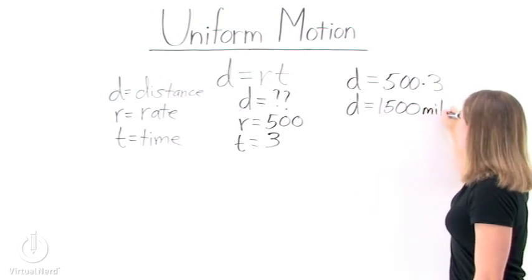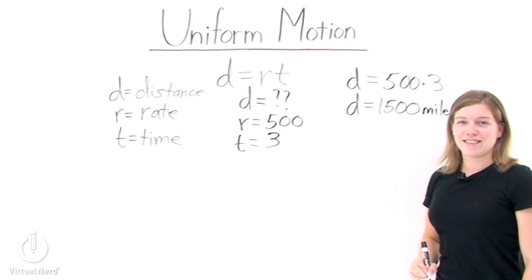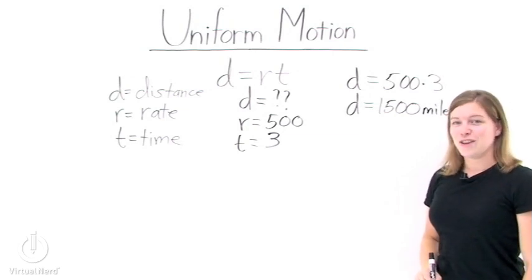So, our plane flew for 1,500 miles like this. That's how we find uniform motion.